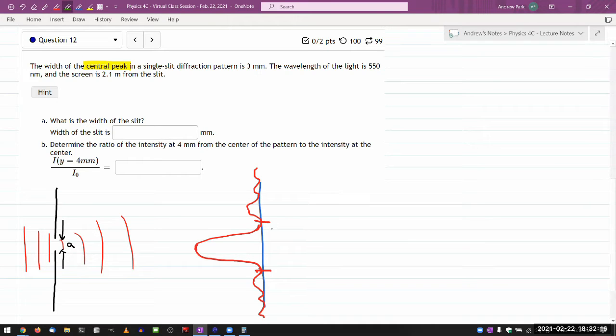Oh, so what the question is referring to is the width of the central peak. Let me refer to this as W, width. So the question is giving me that width. The wavelength of the light is... that's the wavelength. And the screen is some distance of D from the slit.